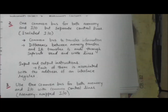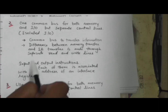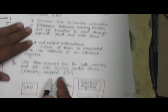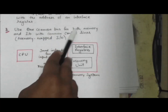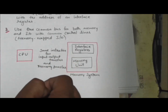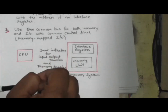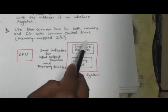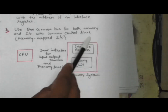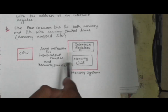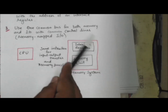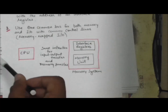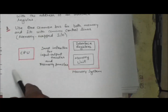The isolated input-output method isolates memory and input-output addresses — each has its own address space. The third method is using one common bus for both memory and input-output with common control lines. This method is called the memory-mapped input-output method. In this configuration, the computer treats the interface registers as part of the memory system. The same address space is used for both memory and input-output, so addresses assigned to interface registers cannot be used for memory words.